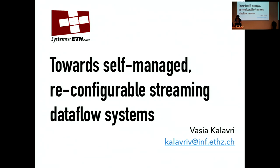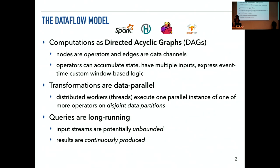I will start by giving an overview and a general framework for you to understand what I mean by data flow systems. The systems I'm talking about — what I mean when I say streaming data flow systems — are systems like Spark, Heron, and Flink. In some cases also systems like TensorFlow, because they have a lot of similarities.